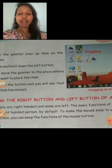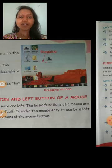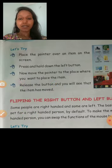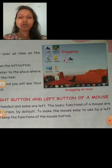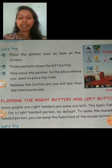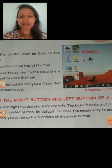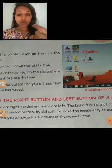Some are left-handed and some are right-handed. The basic functions of a mouse are set for a right-handed person by default. To make the mouse easy to use by a left-handed person, you can swap the function of the mouse buttons. In this chapter, you can see that mouse button settings can be changed.